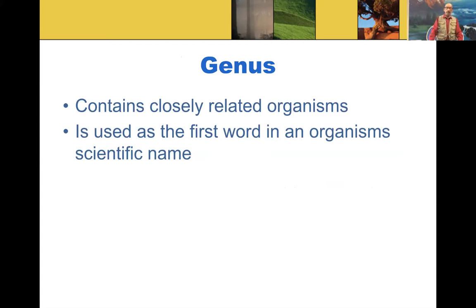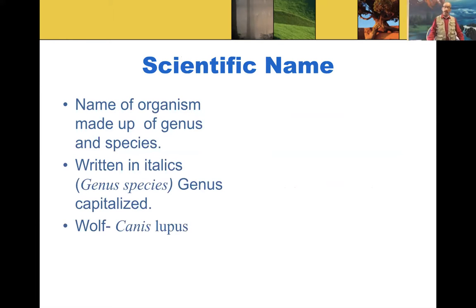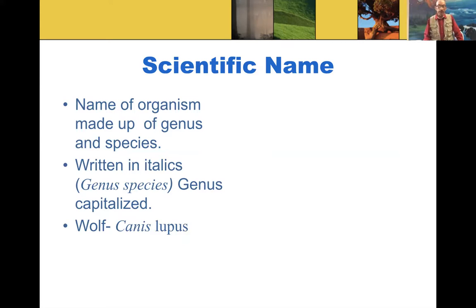Genus contains closely related organisms and is used as the first word in the organism's scientific name. The scientific name of an organism is made up of genus and species, written in italics. The genus is capitalized and the species begins with a lowercase letter. For example, wolf: Canis lupus — Canis is italicized and capitalized, and lupus is written in all lowercase letters.